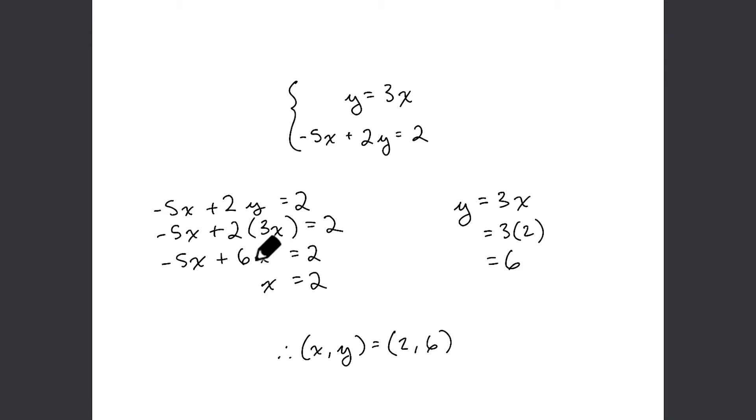So now we know -5x + 6x = 2. And this is pretty quick to solve because -5 + 6 = positive 1. So that leaves us just with x, a single x, on the left-hand side of the equation. So we know now that x = 2.